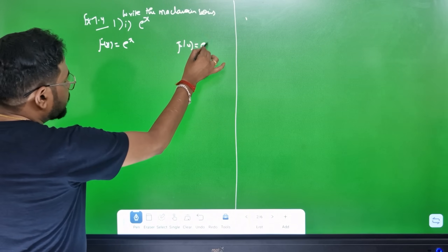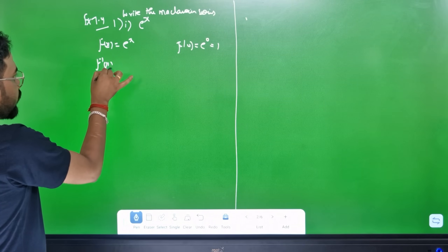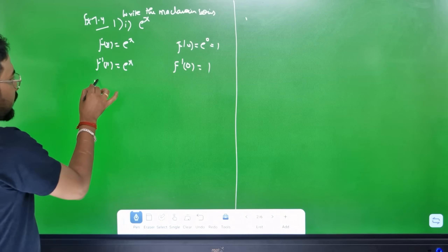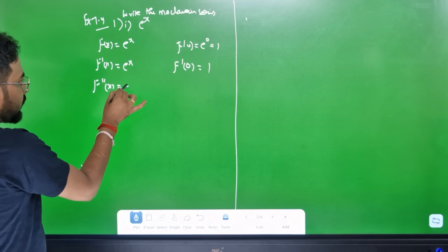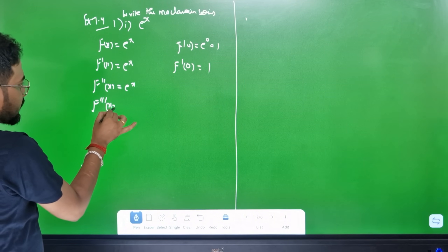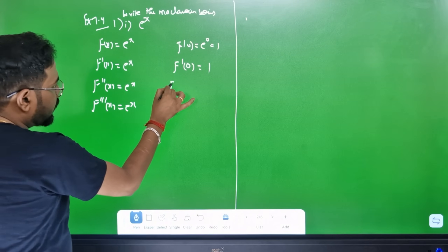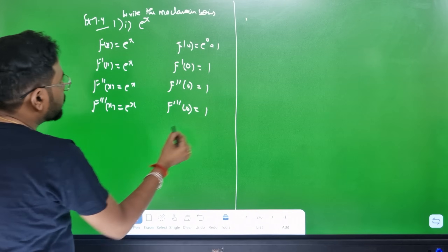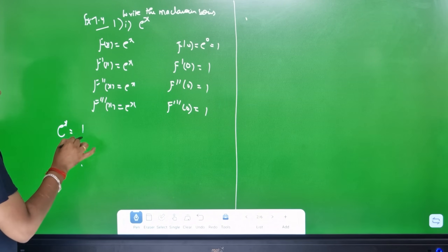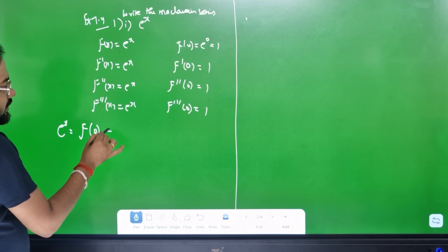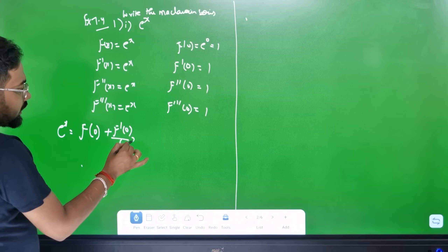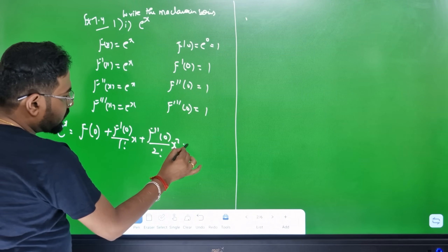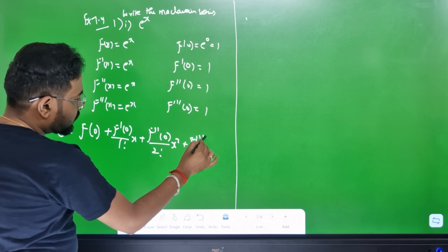f(0) = e^0 = 1. f'(x) = e^x, so f'(0) = e^0 = 1. f double dash of 0 equals 1, f triple dash of 0 equals 1. The formula: e^x equals f(0) plus f'(0) times x plus f''(0) divided by 2 factorial times x squared plus f'''(0) divided by 3 factorial times x cubed and so on.